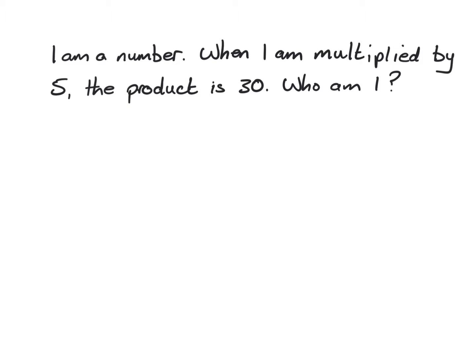Using algebra, I am a number so I need to find x, and when I am multiplied by five the product is thirty. Something very important: the x in x-times-five is not the same symbol as the multiplication sign. In algebra and mathematics we need to be very careful of the symbols we use. What multiplied by five gives thirty? Six times five equals thirty.